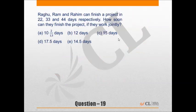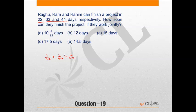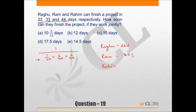Question 19: Lagu, Ram, and Rahim can finish a project in 22, 33, and 44 days respectively. How soon can they finish together? In one day they do 1/22 + 1/33 + 1/44 of the work, and the total days required is the reciprocal of this sum.